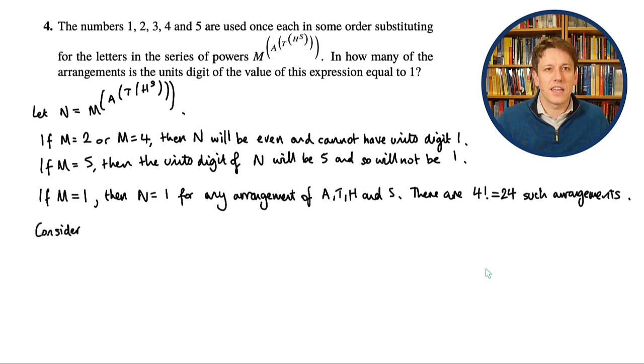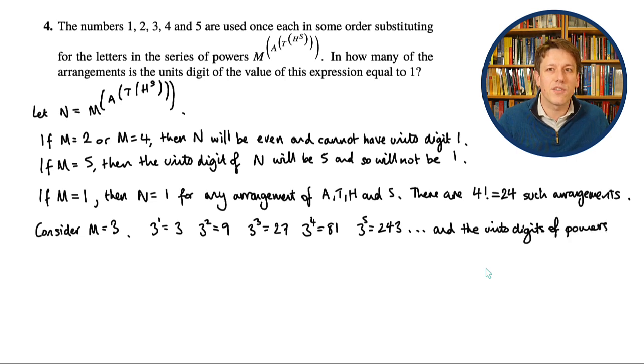And then the hardest case to think about is m equals 3. So if you think about the powers of 3, 3 to the 1 is 3, 3 squared is 9, 3 cubed is 27, 3 to the 4 is 81, 3 to the 5 is 243, and so on. What happens is that the last digits will cycle 3, 9, 7, 1 repeatedly, because the product of the last digits is just the last digit of the product. That's something we talk a lot about in my Go for Gold in Maths Challenge courses over at Mathsaurus, where, by the way, there are lots of free courses for Maths Challenges and Olympiads you can have a go at.